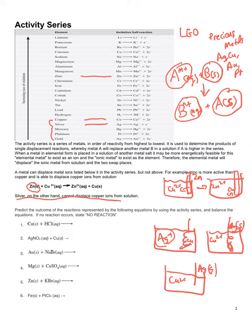Let's look at some reactions and use the activity series to see if a reaction will take place. If it does, let's write out the products. If it doesn't, we say no reaction. First: copper and hydrochloric acid. Hydrochloric acid gives us hydrogen ions, and we compare hydrogen and copper. H⁺ would rather be the ion, and copper is below it — it would rather be the metal. Since copper is already a metal, this will be no reaction.